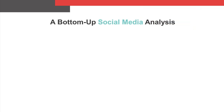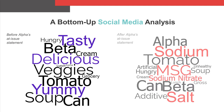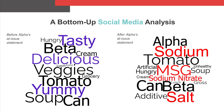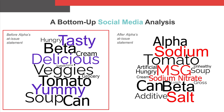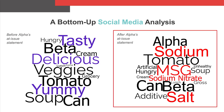In this analysis, we measure the frequency of words appearing in posts about Beta in the month before Alpha's ad issue statement and the month after Alpha's statement. In these word clouds, words that occur more frequently in the dataset appear larger. In the before word cloud on the left, frequently occurring words include tasty, delicious, and yummy. In the after word cloud on the right, frequently occurring words include sodium, MSG, sodium nitrate, and salt.